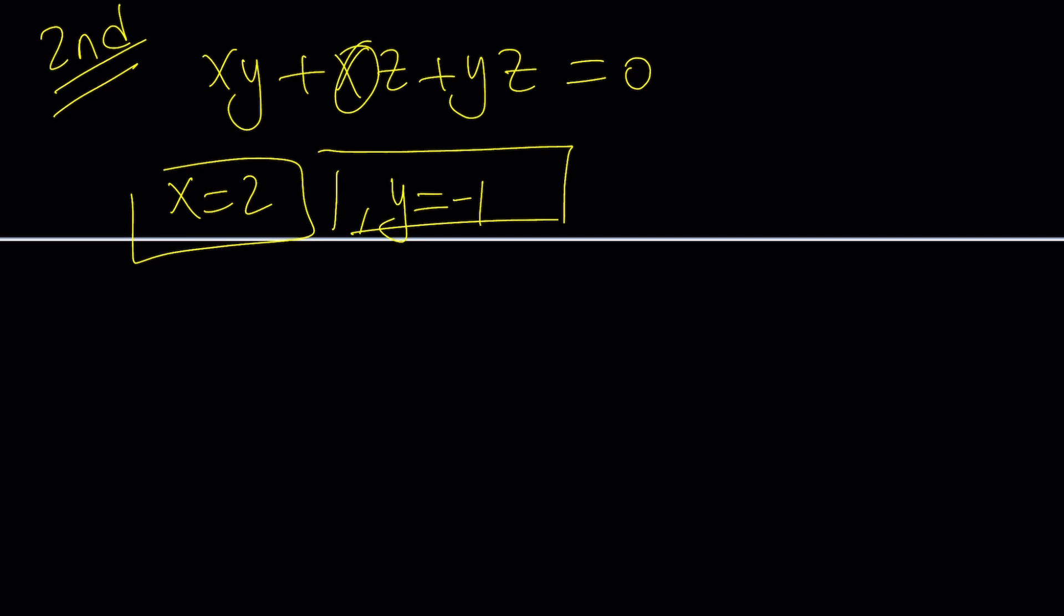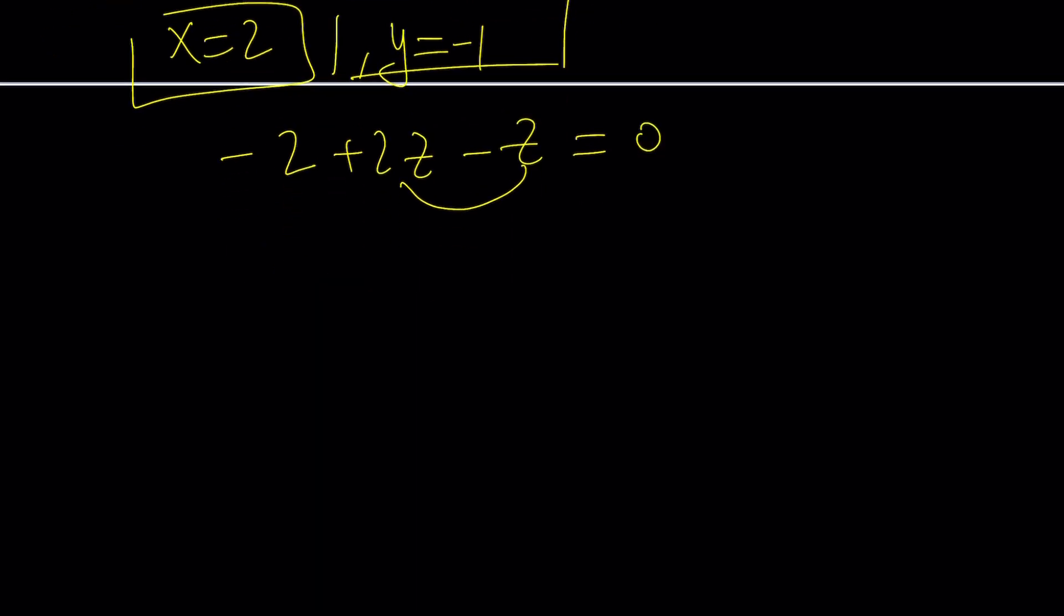If x equals 2 and y equals negative 1, we get negative 2 plus 2z minus z. Yes. I think this will do the trick because we get a 1z from here. And that means z is equal to 2. Beautiful. So x and z are equal, which is nice.